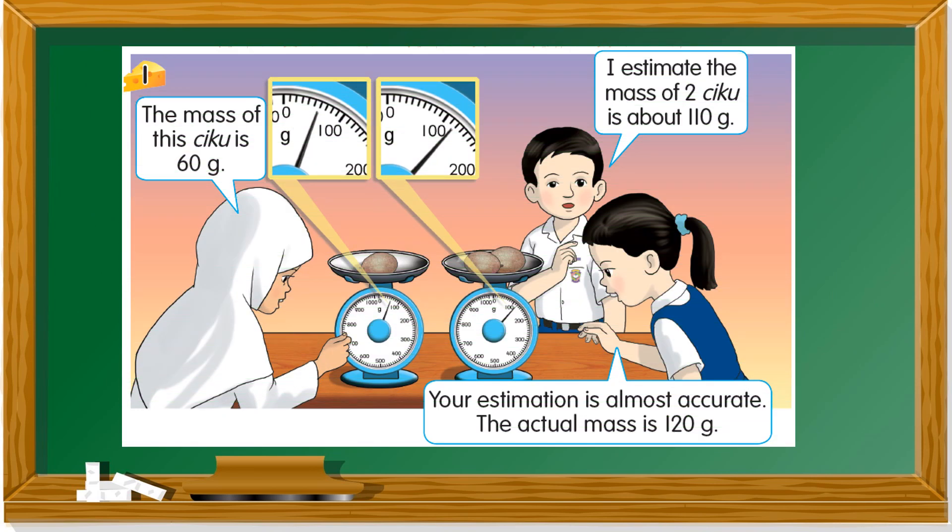Let's take a look at this picture. So the girl said the mass of this chiku is 60 gram. How do you know it's 60 gram? You see here 10, 20, 30, 40, 50, 60. It points to 60 gram because this is 100. So if we count from here, 60, 70, 80, 90, 100. So the mass of one chiku is 60 gram.